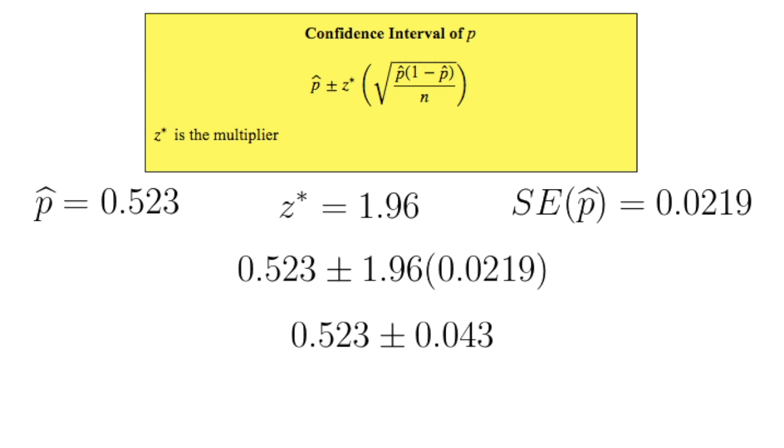Our point estimate is the sample proportion of 0.523, and our margin of error is equal to 0.043.